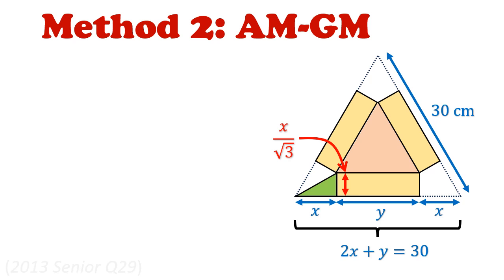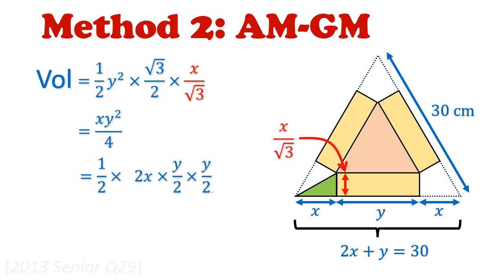The volume of the box is still equals to the base area, which is still half a, b, sin c, times the height of the box, which is still x over square root 3. This simplifies into x, y squared over 4. We can split this up into four factors. I would like to turn your attention to the last three factors, which we will be using for the AM-GM inequality.